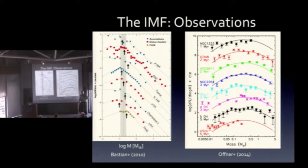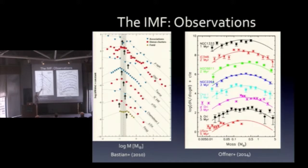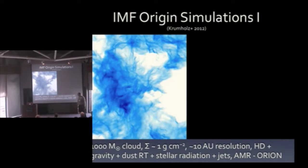These are measured IMFs in a bunch of different star-forming regions covering a range of properties. The lines going through the data are not fits — that's actually the measured field star IMF. With maybe the exception of Upper Sco, this fits remarkably well. You get a very broad range of regions all showing more or less the same IMF — the same as the galactic field. Some contain massive stars, some don't, so clearly the presence of massive stars doesn't seem to make a difference. You always get this characteristic mass peak between 0.1 and 1 solar masses.